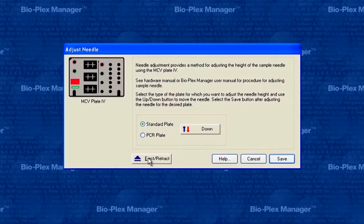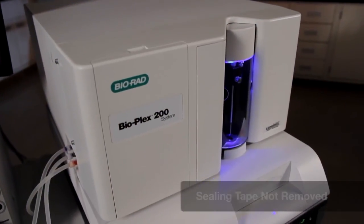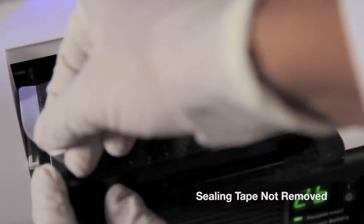Presence of sealing tape on the assay plate during data acquisition hinders probe movement into the well. In this case, clicking eject and removing the sealing tape before resetting the plate in the platform for acquisition ought to resolve the issue.